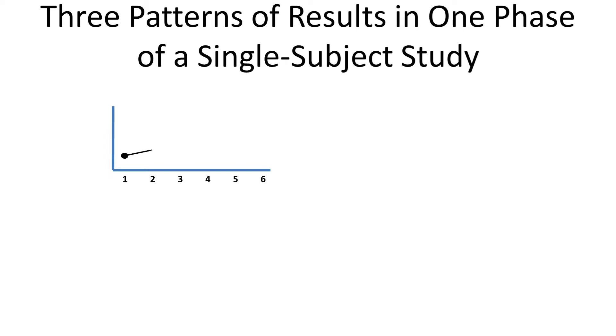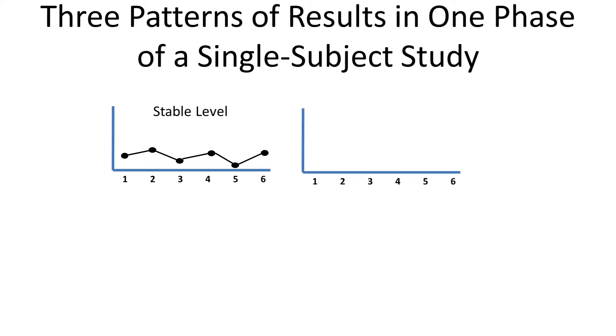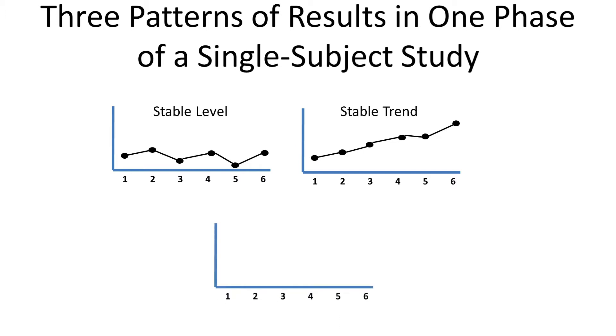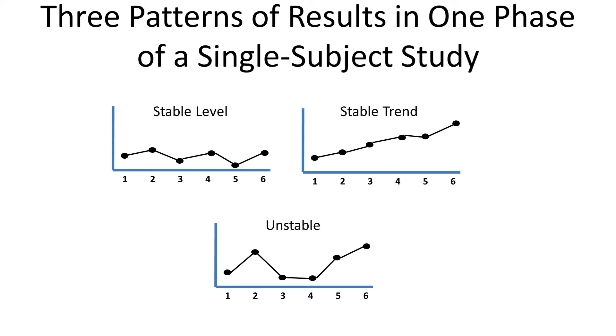There are three patterns of results you could get when doing single-subject research. You could get a stable level, or you could get a stable trend. But then there's always the possibility of unstable data — and with unstable data it's impossible to know if it's a trend or a level because you don't know which direction it's going. Those are the three basic results you could get.